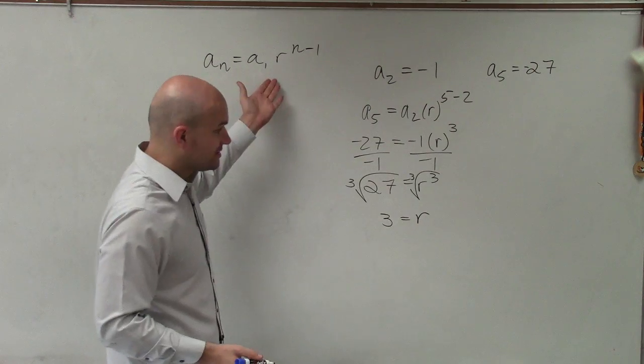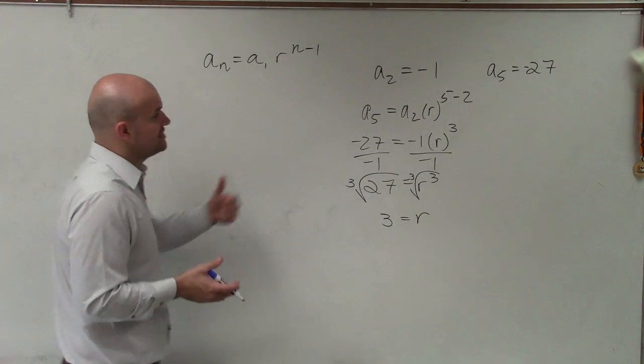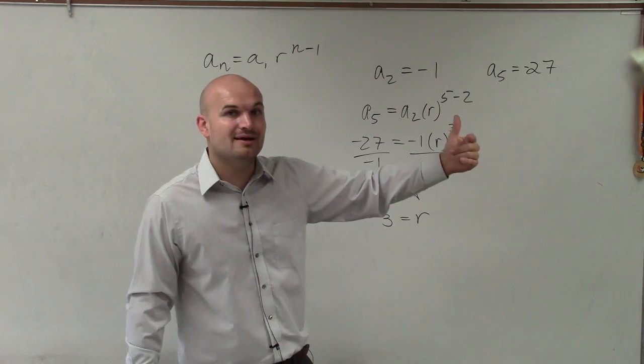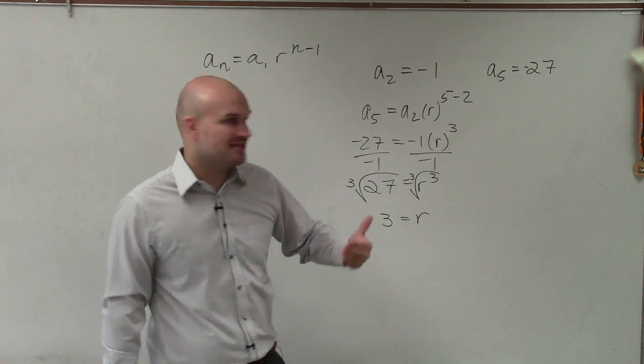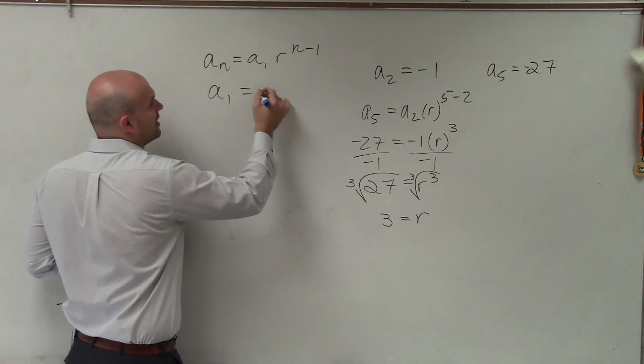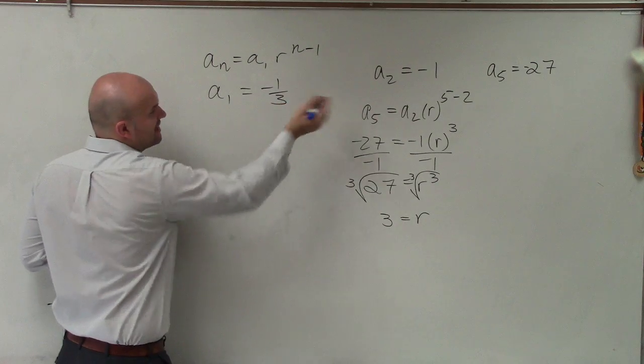So now I know what the r is. That means to go from a sub 2 to a sub 3, I'm going to multiply by 3. So if I want to figure out a sub 1, I'm just going to divide by 3. So now I can say that a sub 1 equals negative 1 third.